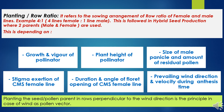Planting the seed or pollen parent in rows perpendicular to the wind direction is the principle in case of wind-aided pollen vectors, because pollen from the male parent falls directly onto the stigma of the female parent, resulting in maximum outcrossing and good yield ultimately.